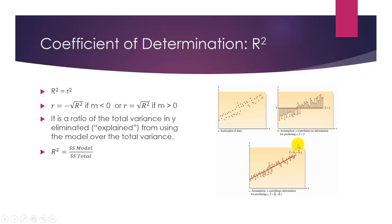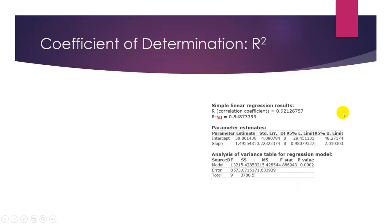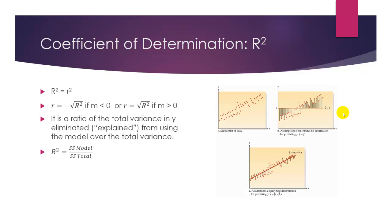r squared is defined to be the total variance in y that's eliminated, so how much of these errors are eliminated by doing this, over the original errors, so it's a ratio. Since it is a ratio, it can be converted to a percentage, and it should always be between 0% and 100%.